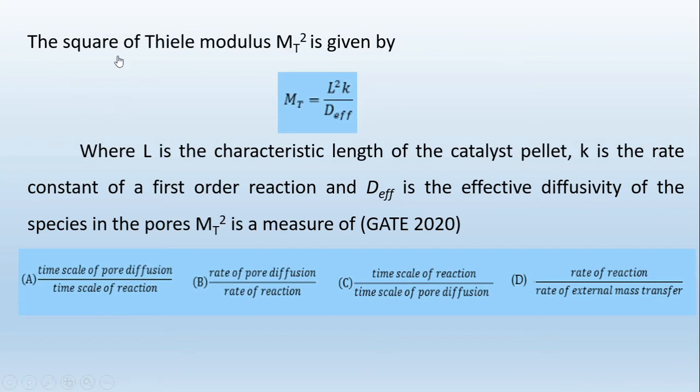The square of Thiele modulus M_T^2 is given by M_T = L^2k/D_eff, where L is the characteristic length of the catalyst pellet, k is the rate constant of a first order reaction, and D_eff is the effective diffusivity of the species in the pores. M_T^2 is a measure of - there are four options given here. We need to pick the correct option for the Thiele modulus.